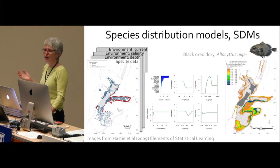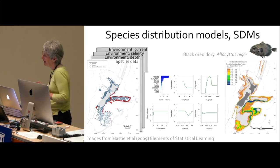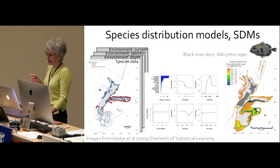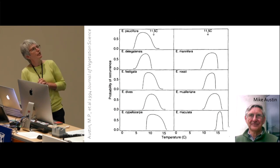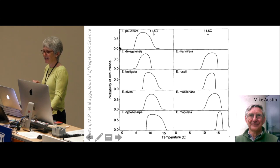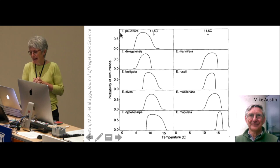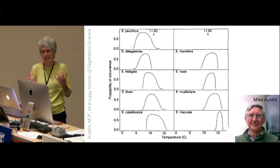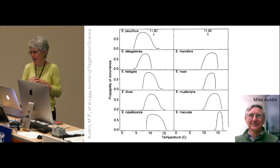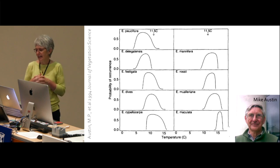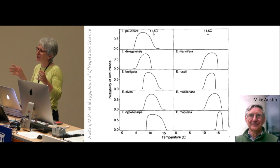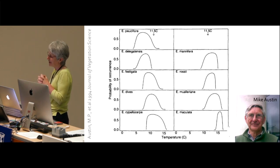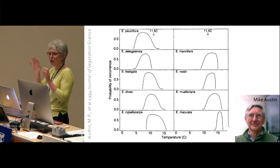These are called species distribution models, ecological niche models, or habitat suitability models. Some of the earliest work in this area was done by Australians. Here we have modelled responses of nine different eucalypt species to temperature on the x-axis and probability of occurrence on the y-axis, fitted in a generalized linear model. The shape of these curves, the optima, the skews, help tell us about species and help us understand vegetation theory and what drives species distributions.